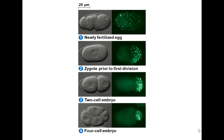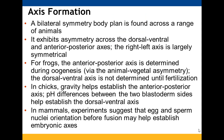Bilateral symmetry body plan is found across animals — both dorsal-ventral and anterior-posterior axes are present, and the right-left axis is largely symmetrical. For frogs, the axis can be determined based on the poles established during oogenesis, while the dorsal-ventral axis isn't determined until fertilization. In chicks, gravity helps determine the anterior-posterior axis and pH differences between blastoderm sides help determine dorsal-ventral. In mammals, the orientation of the egg and sperm nuclei before fusion may help establish the embryonic axes.